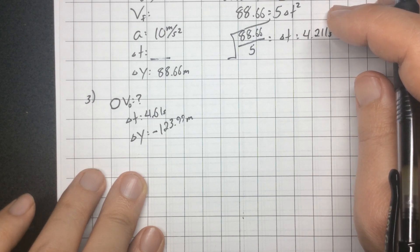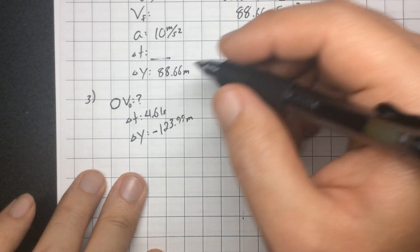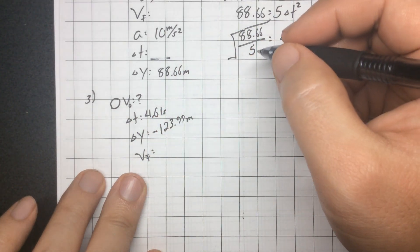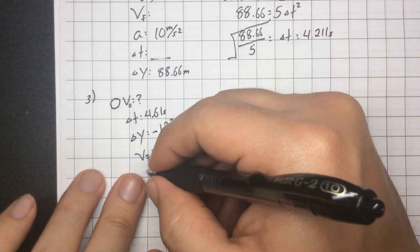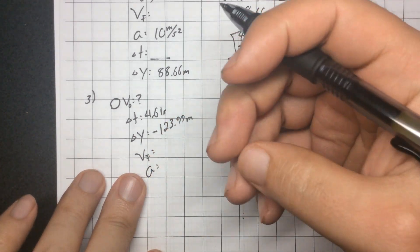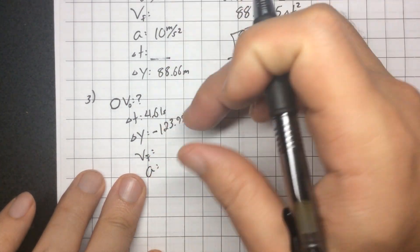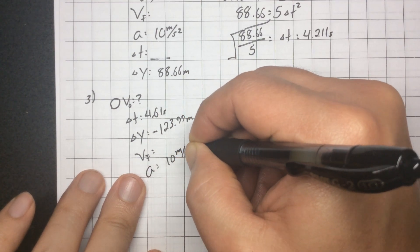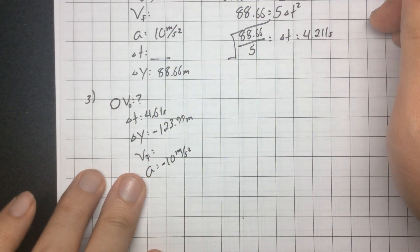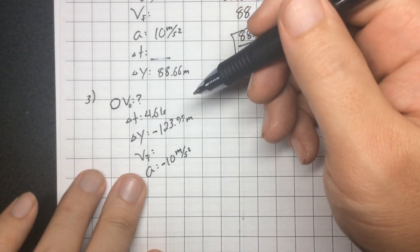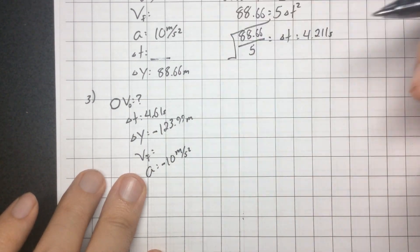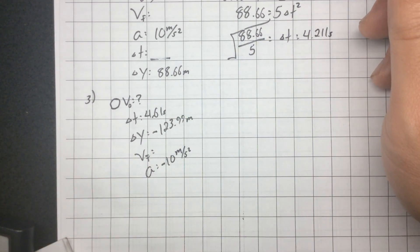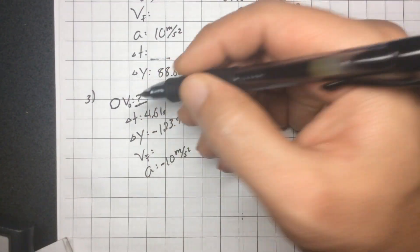How could I figure this out? Do I have final velocity? Nope. Do I have the acceleration? Yes, because it's in free fall — just due to gravity. So I'm going to put negative 10 meters per second squared, because in this problem the negative actually matters since we could have upward then downward motion. Here are my five things, and I'm looking for the initial velocity.